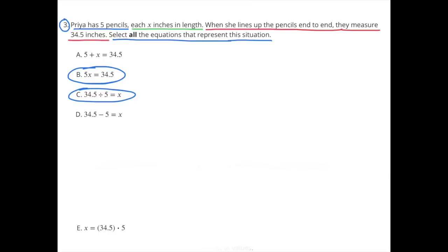Number 3. Priya has 5 pencils, each X inches in length. When she lines up the pencils end to end, they measure 34 and 5 tenths inches. Select all the equations that represent this situation. I selected B, 5X equals 34 and 5 tenths, and C, 34 and 5 tenths divided by 5 equals X.